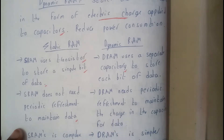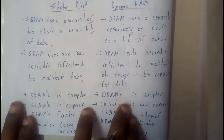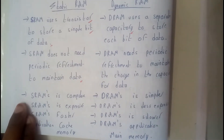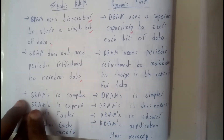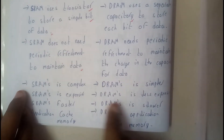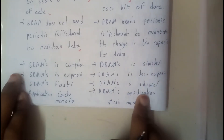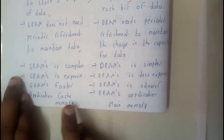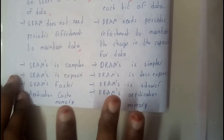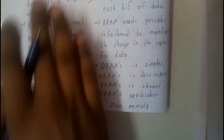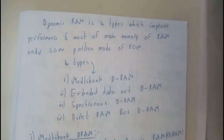Dynamic RAM should be refreshed frequently. Static RAM is complex in construction whereas Dynamic RAM is simple. Static RAM is expensive and Dynamic RAM is less expensive. Static RAM is faster and Dynamic RAM is slower. The application of Static RAM is cache memory, and Dynamic RAM is used as main memory.